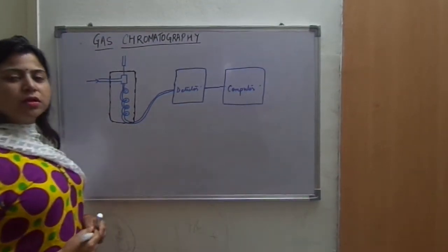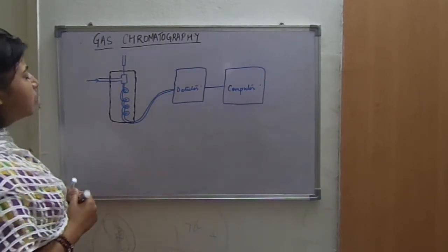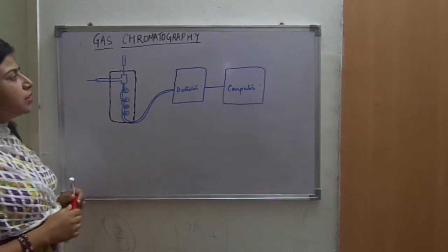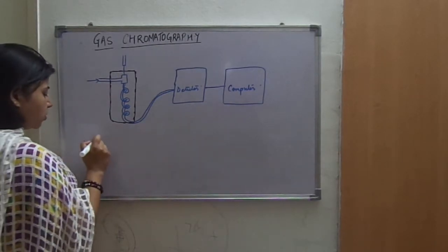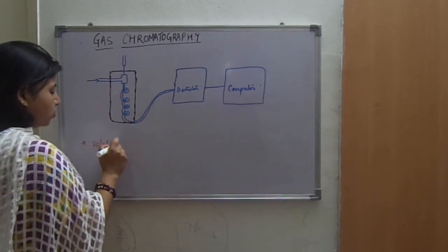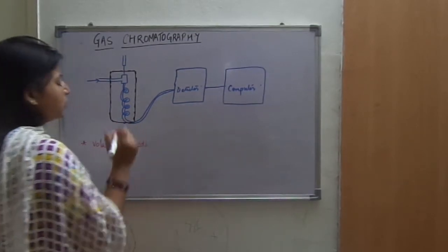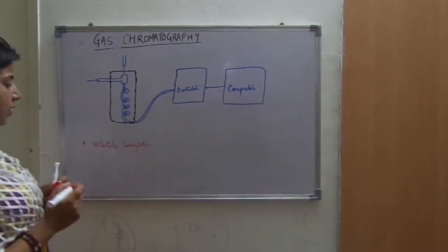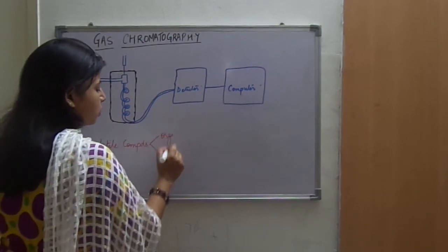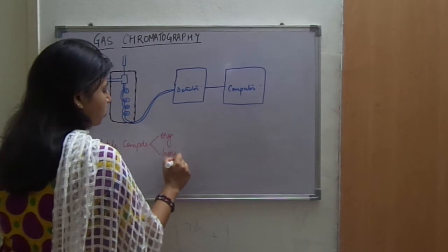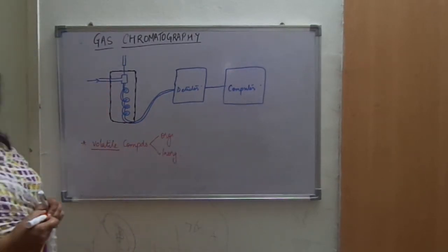Hello everyone, we will discuss the topic of gas chromatography today. Gas chromatography is a technique used for separation of volatile compounds. In this technique, the volatile compound can be an organic compound or an inorganic compound. But the main property required for gas chromatography is volatility.